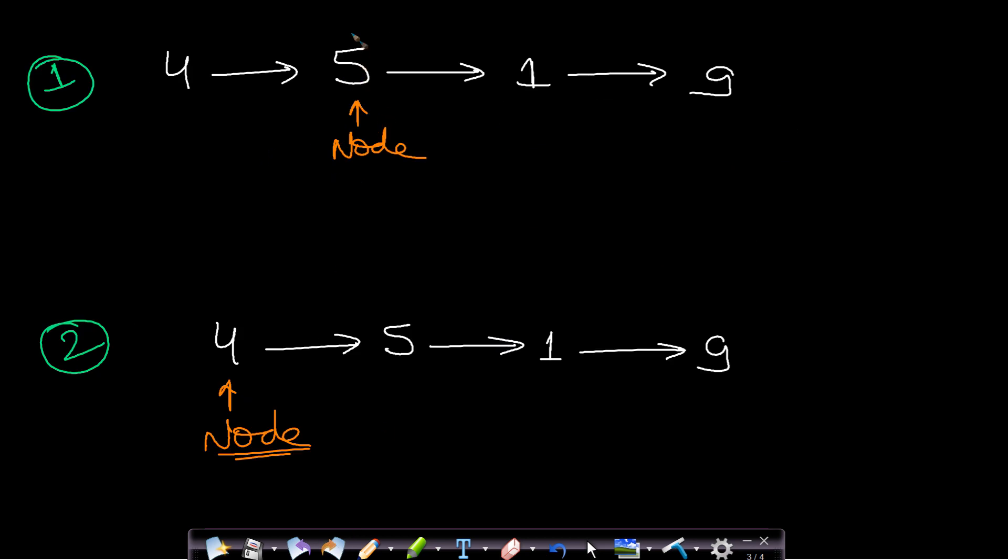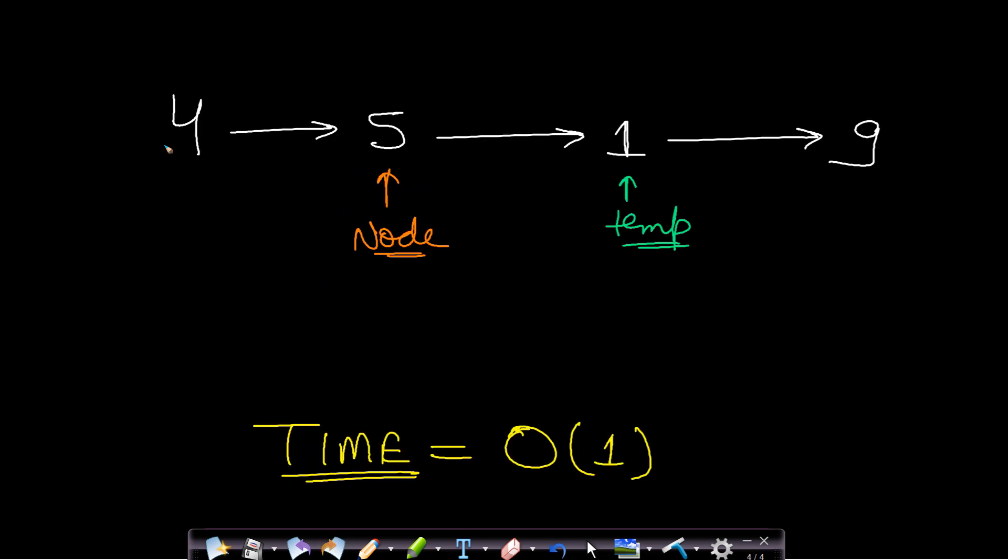So there are basically two cases: the node will be some middle node or the node will be pointing to the head node. Both these cases can be solved by using just a single method. So if you are given 4-5-1-9 and let's say you are asked to remove this node 5, then what will you do?